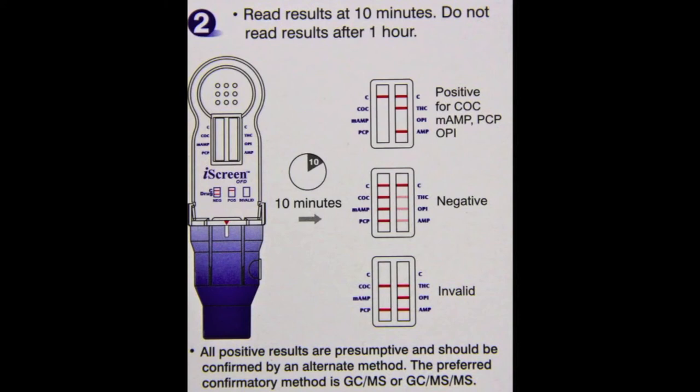The second set of results show a negative for drug use. The third window displays an invalid result because there is no line in the control region.